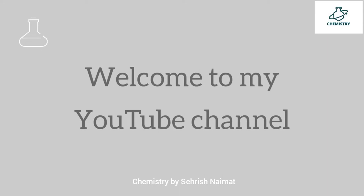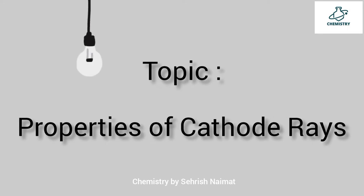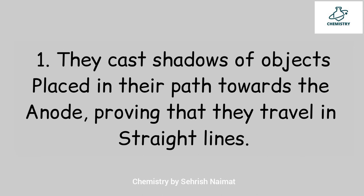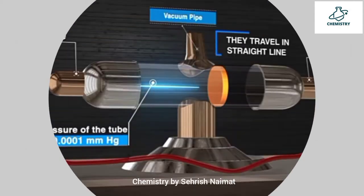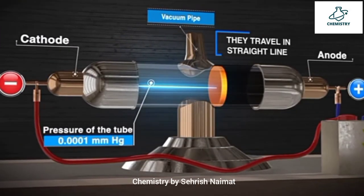Assalamu alaikum students, welcome to my YouTube channel. In this video we will discuss the properties of cathode rays. First property: they cast shadows of objects placed in their path towards the anode, proving that they travel in straight lines.